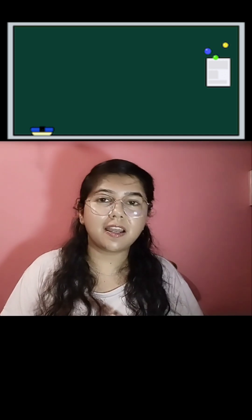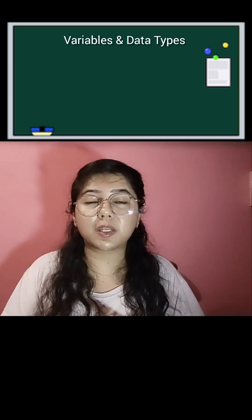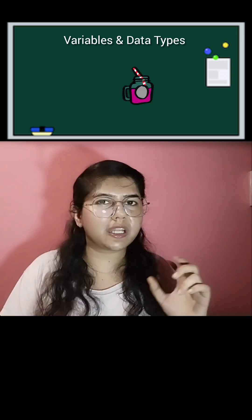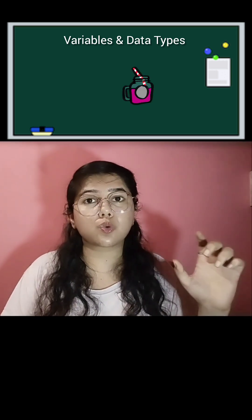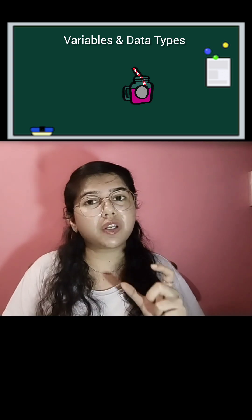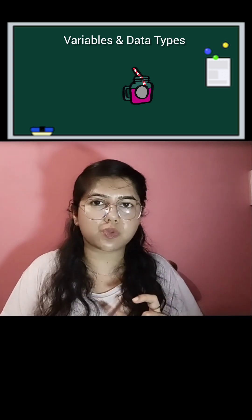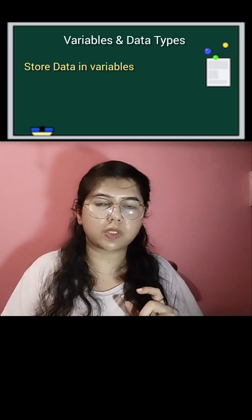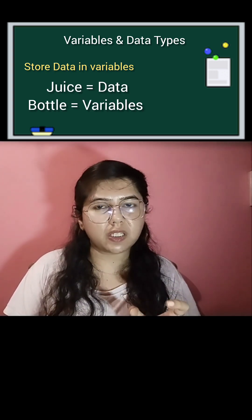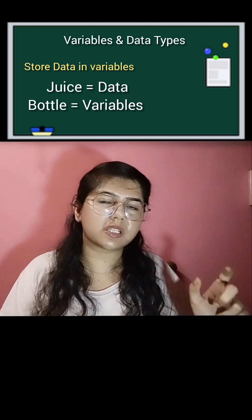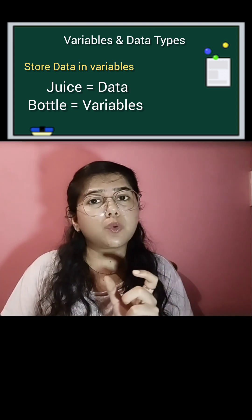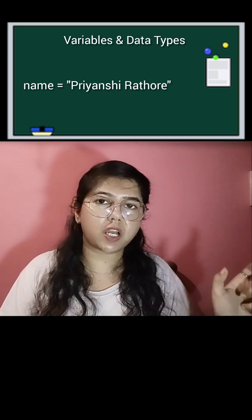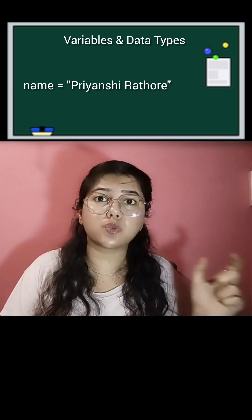Today is Day 1 of learning Python, and we will learn about variables and data types. What are variables? For example, if you store juice in a bottle, the bottle is a container where you are storing juice. Similarly, if you want to store data, you need a variable. So in place of the bottle there is a variable, and in place of juice there is data. For example, if you create a variable called 'name' and store 'Priyanshi' in it, then 'Priyanshi' is the data stored in that variable.